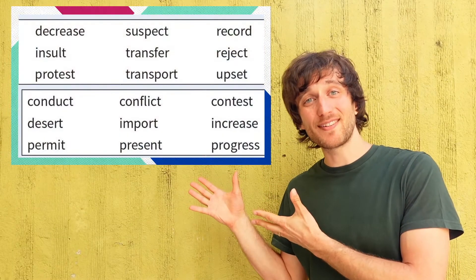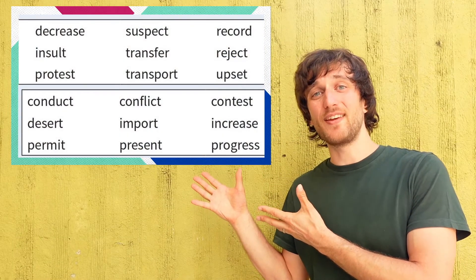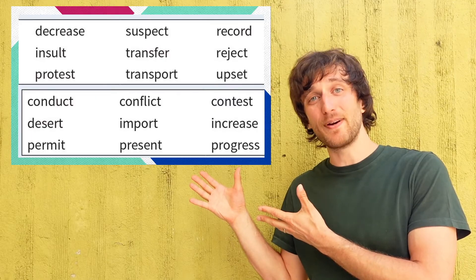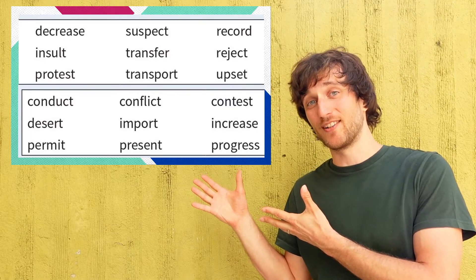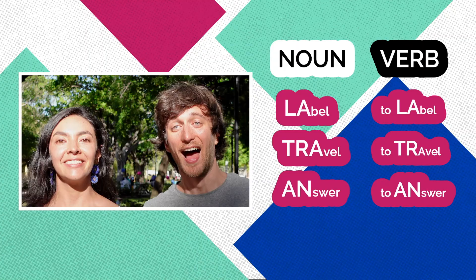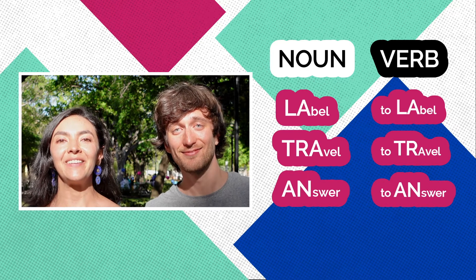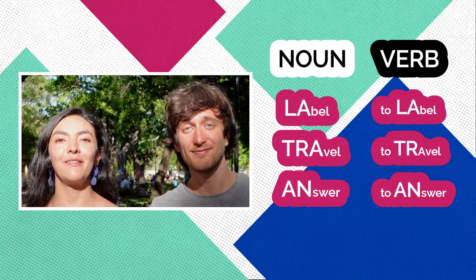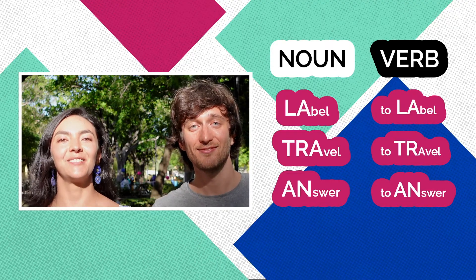Here are some more examples like these taken from the English Vocabulary in Use upper intermediate book. Finally, there are some exceptions — these words keep the same stress pattern when used as both nouns and verbs: label / to label, travel / to travel, answer / to answer.